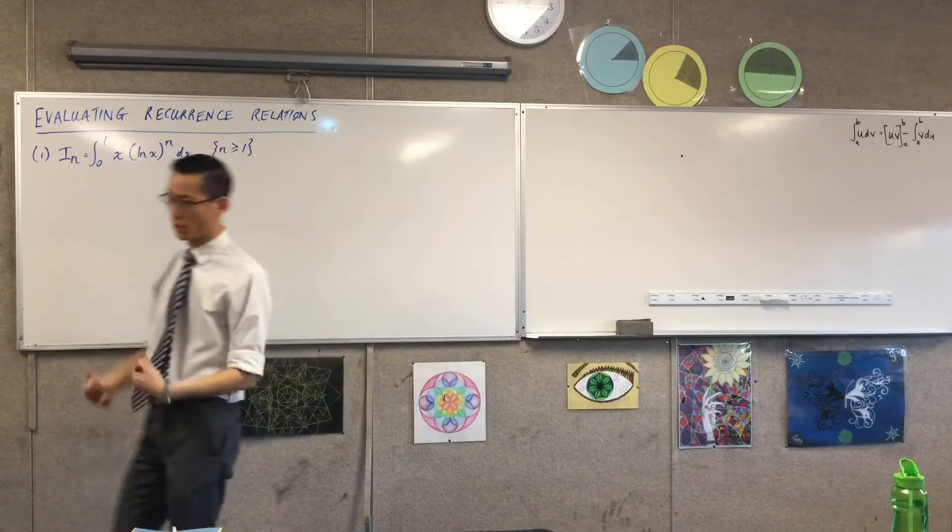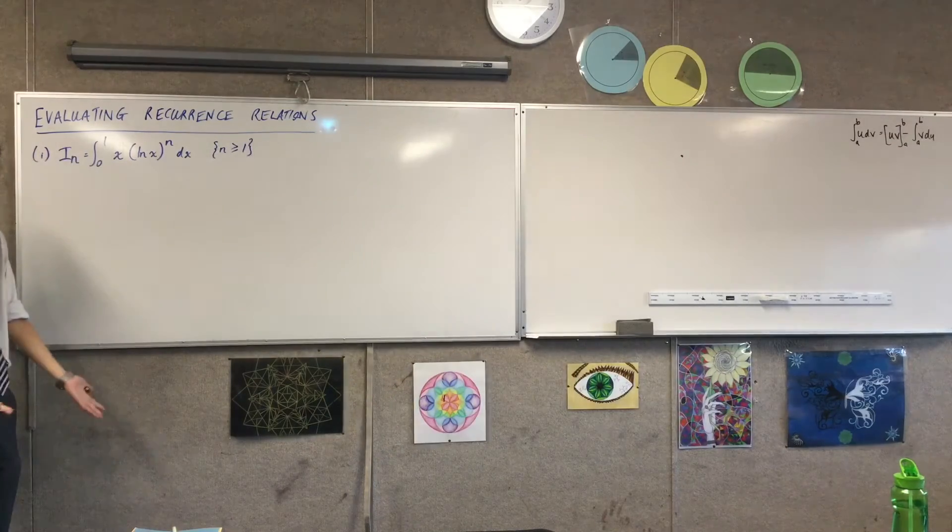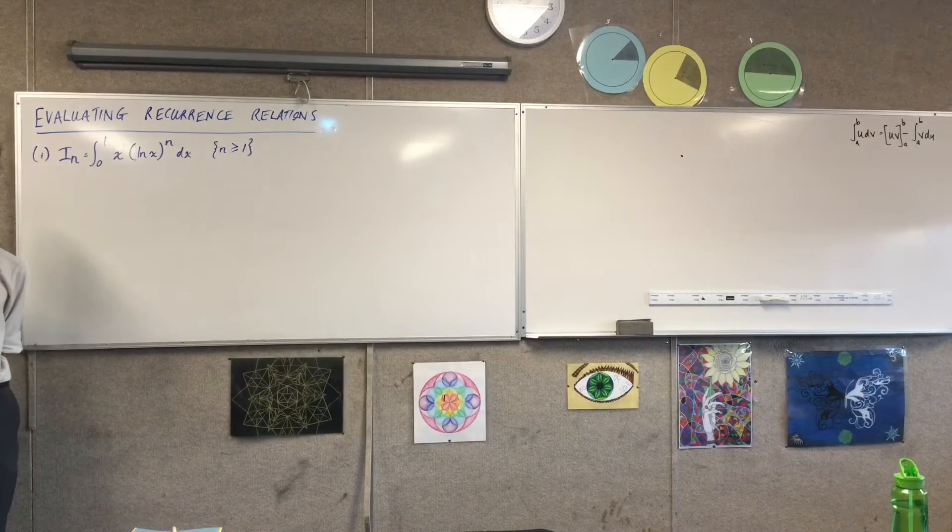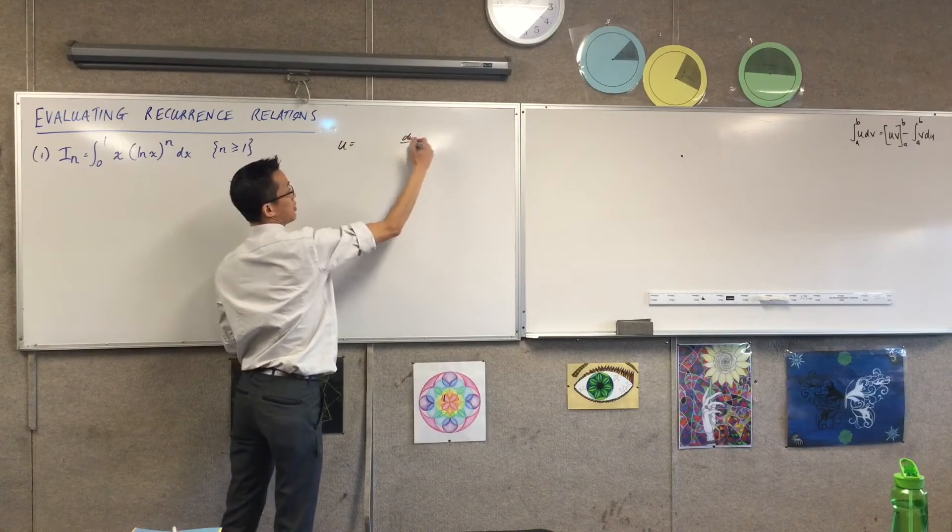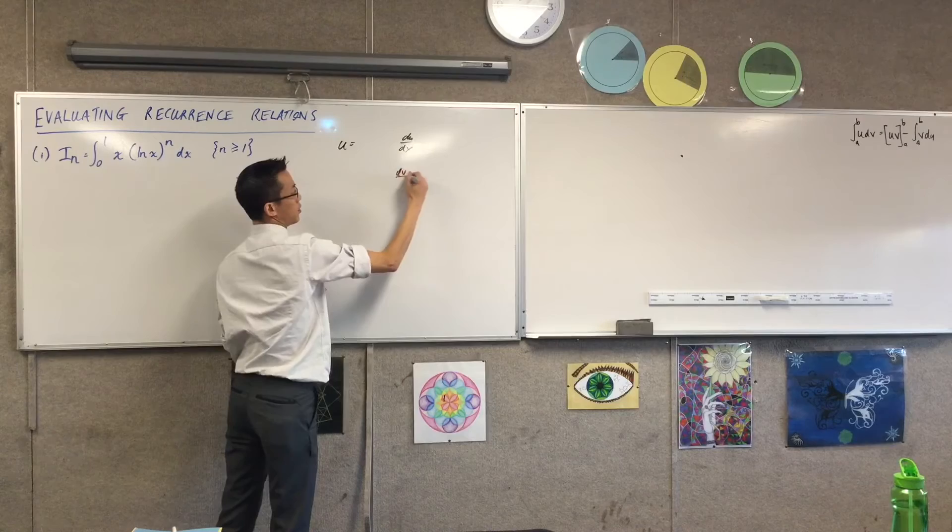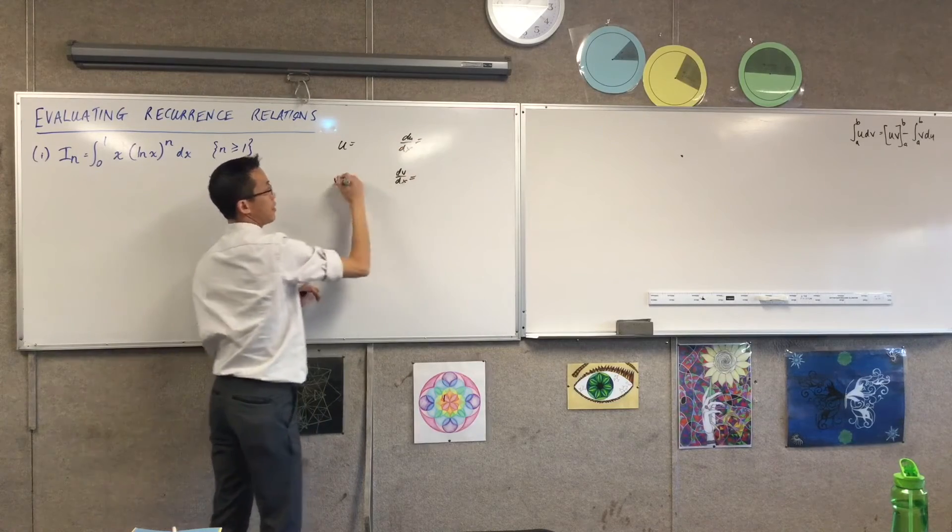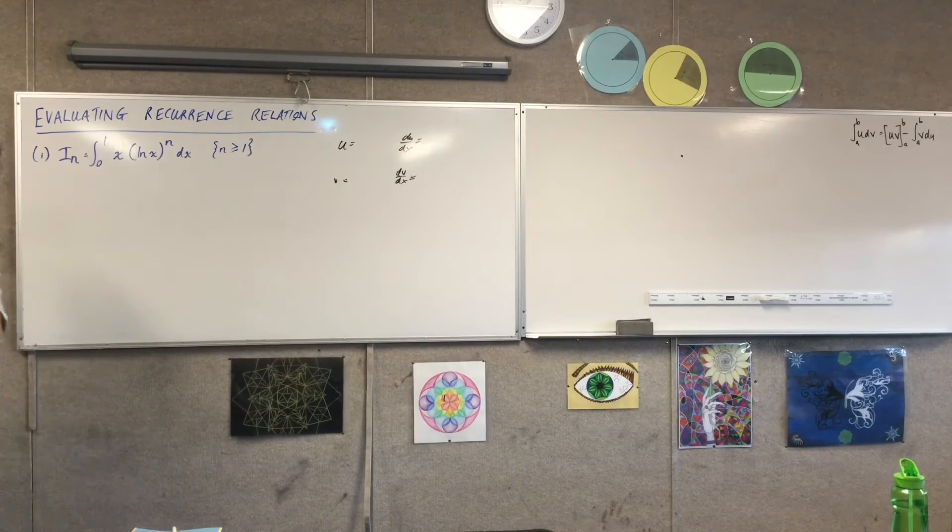So let's have a go at this. We're going to begin by thinking about integration by parts. What would you like me to try? I'm looking for u which will give me du, and I'm looking for dv which will give me v. Suggestions?